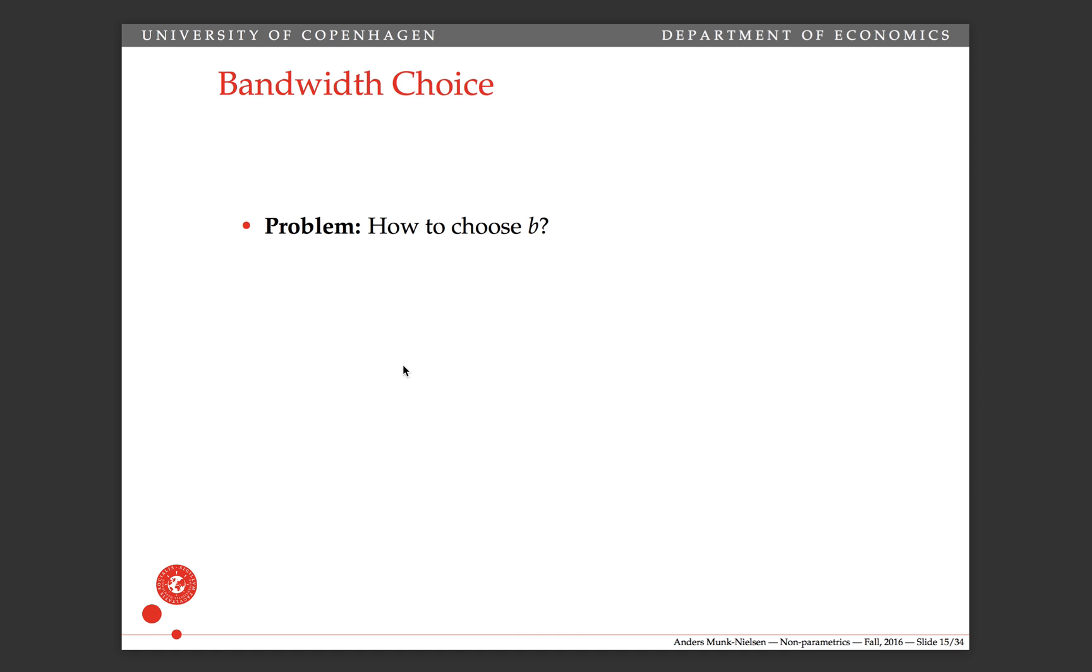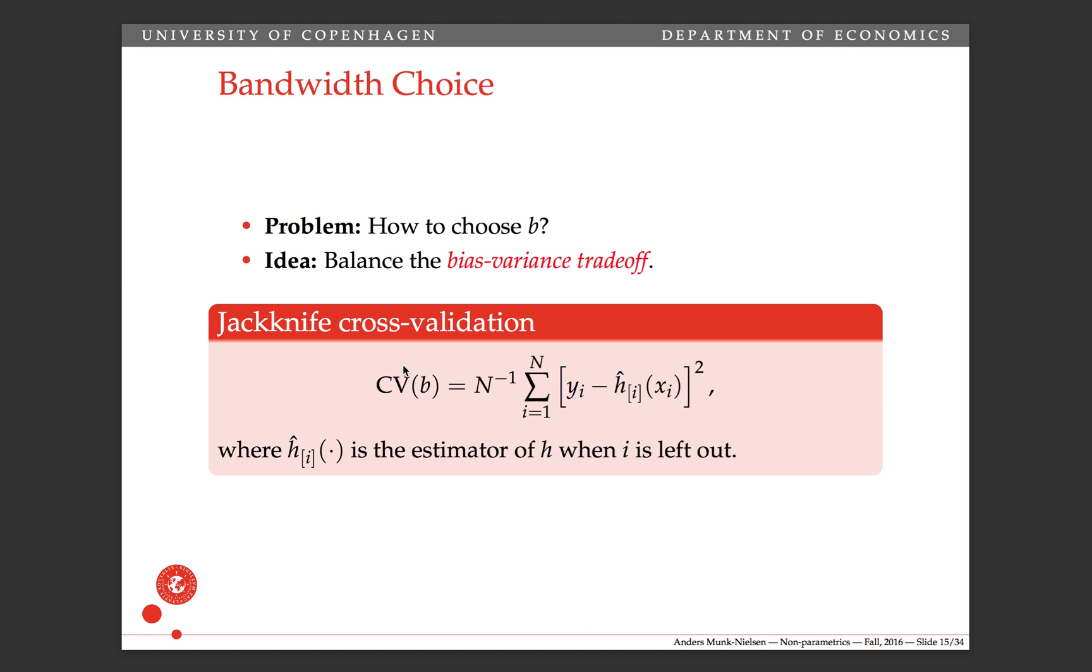How do we choose this bandwidth? The idea is to balance this bias-variance trade-off that I've talked about, and one way of doing that is using the jackknife cross-validation criterion.